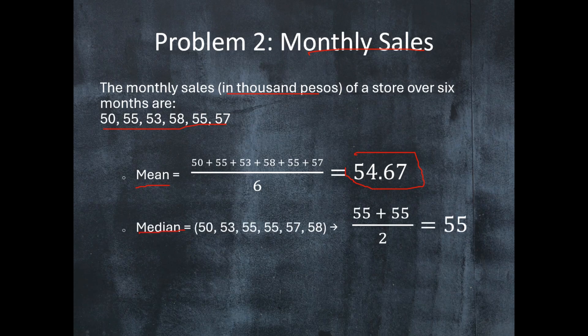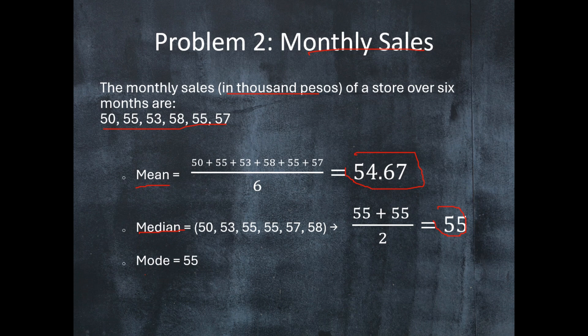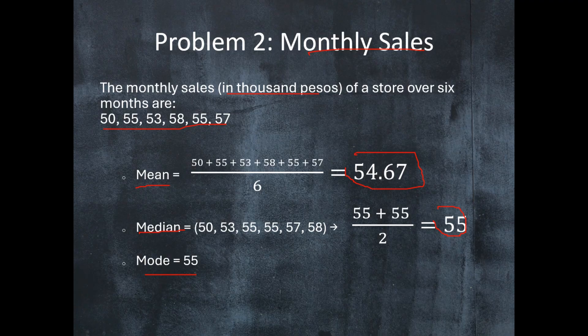The median is 55,000 and the mode is also 55. Based on these measures, what conclusion can we draw about the monthly sales of the store?